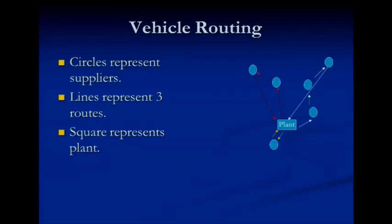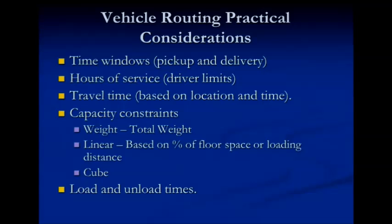Basically, the vehicle routing problem is: I have a bunch of locations that I need to pick up or deliver to, and I have to get the truck from the plant to cover all the locations. You want to do that in a minimum amount of cost or time depending on your metric of concern. Many practical considerations exist, and this is what the Coke paper you're going to read covers — bring it next time and we'll talk about it.